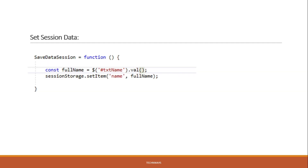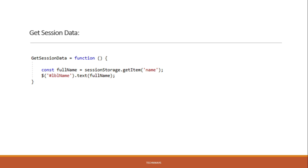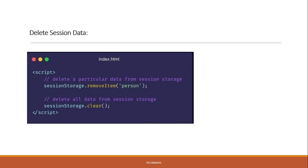To set data in session storage, we use the predefined keyword 'sessionStorage' in jQuery. We call sessionStorage.setItem(), which takes a key-value pair — the name is the key and the value is what we are storing. To get data, we use sessionStorage.getItem() and pass the key name. To delete, we use sessionStorage.removeItem(), or we can call sessionStorage.clear() to clear all session data when the user logs off.